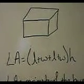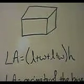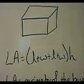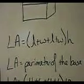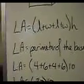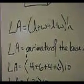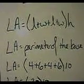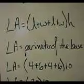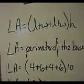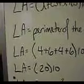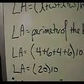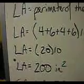Lateral area is equal to the length plus the width plus the length plus the width, multiplied by the height. In other words, the lateral area is the perimeter of the base multiplied by the height of the overall prism. So when I substitute in my variables, lateral area is equal to 4 plus 6 plus 4 plus 6. Take that sum and multiply by 10. 4 plus 6 and 4 plus 6 is 20, so now I multiply 20 by 10, and I get 200 inches squared.